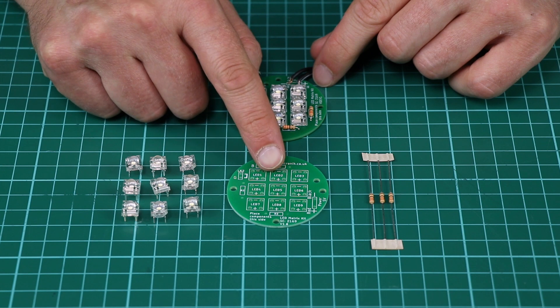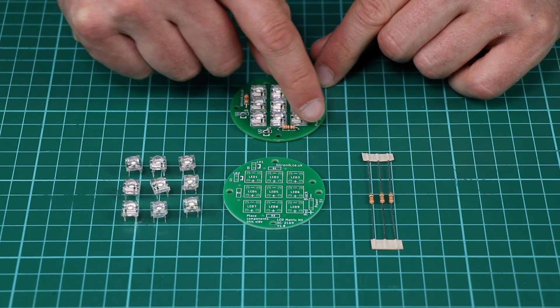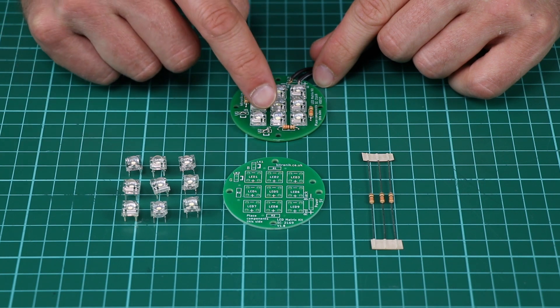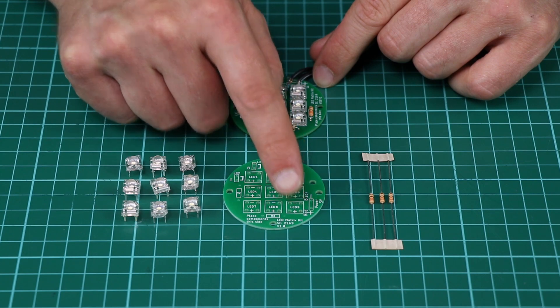The kit comprises of a PCB, three resistors which are located around the outside, and nine LEDs you can see here. These are located in positions in the center of the PCB.